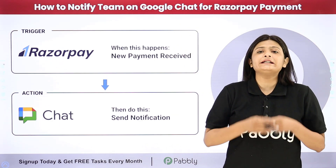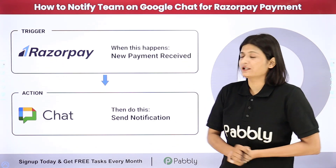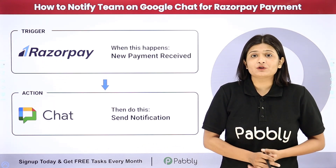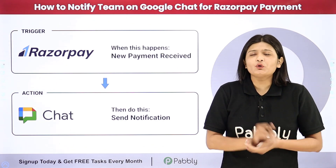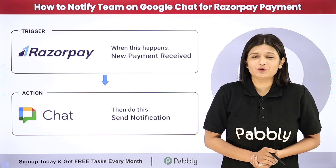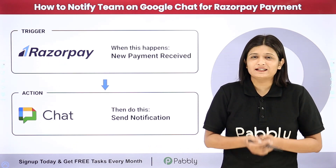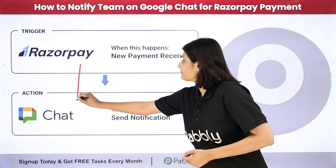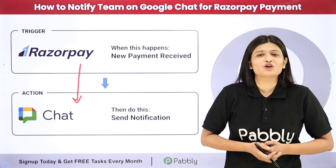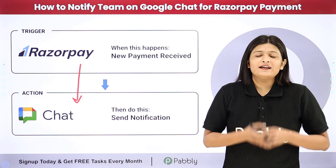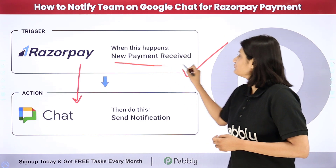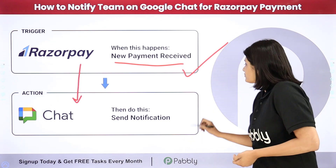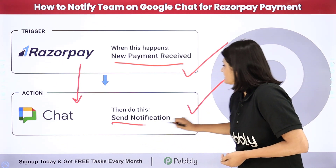Let's suppose I am running a retail business and I am collecting all my payments with the help of Razorpay. Whenever a new payment has been made, my team should be automatically notified about this new payment and all the details. To automate this process I am going to use Pabbly Connect, which is an amazing automation and integration software requiring no coding or programming skills. I just need to build a connection between Razorpay and Google Chat Hangout.